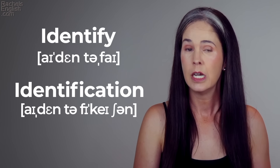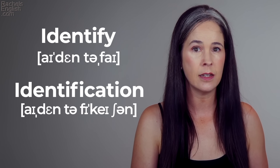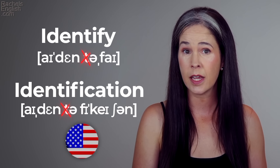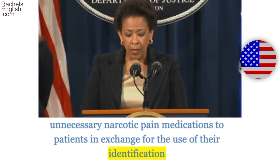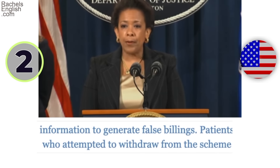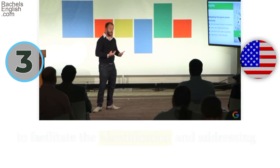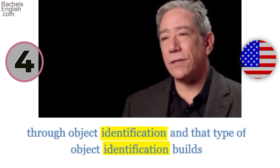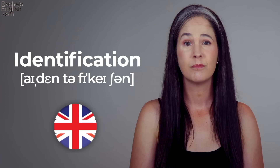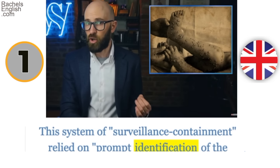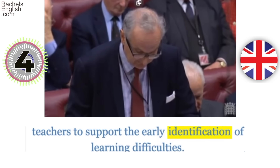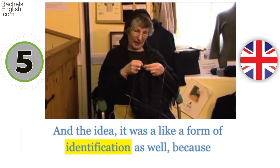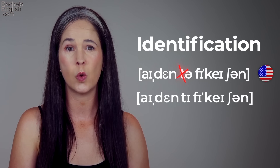The first word we're studying is identify and also identification. Nine times out of ten, an American speaker will drop that T sound, but a Brit won't. American English examples: 'there's a lot of identification of bubbles,' 'in exchange for the use of their identification information,' 'the identification and addressing of malware and threats,' 'through object identification,' 'self-identification comes through the autobiography.' British English examples: 'reliant on prompt identification,' 'the assessment and identification,' 'it's to do with identification with the character,' 'to support early identification of learning difficulties,' 'like a form of identification as well.' Identification or identification.